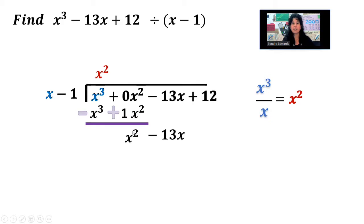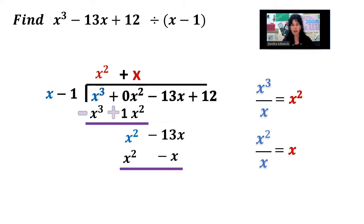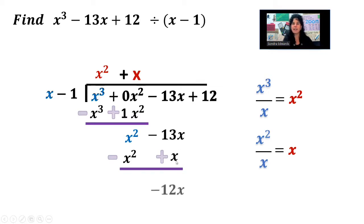Same exact process. We're going to take what's in front over what's in front to decide what goes here. So I'm going to take x squared over x, which is x, and that goes right there — so plus x. Multiply this x to each one of the terms on the side: x multiplied by x is x squared, x multiplied by negative 1 is minus x. Draw our line and subtract, running the negative all the way through. x squared minus x squared is nothing. Negative 13x plus x makes negative 12x.